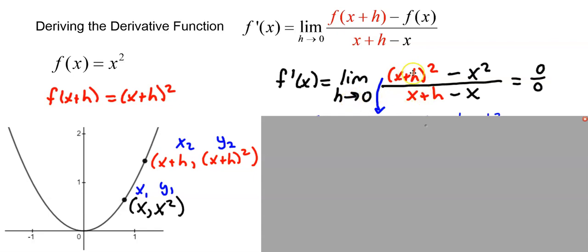Once again, if I put zero in for h, I'm going to have x squared minus x squared over x minus x, which is zero over zero. So I do have to figure out how to handle this with a limit.